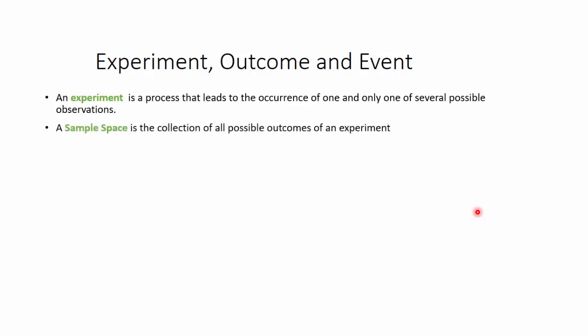A small recap on what experiment, outcome, and events were. An experiment is a process that leads to one of several possible observations and whose outcomes are uncertain. A sample space is a collection of all possible outcomes of a given random experiment, and an outcome is that particular result of an experiment—a singular element. While an event is a collection of one or more outcomes of the experiment with a common characteristic.